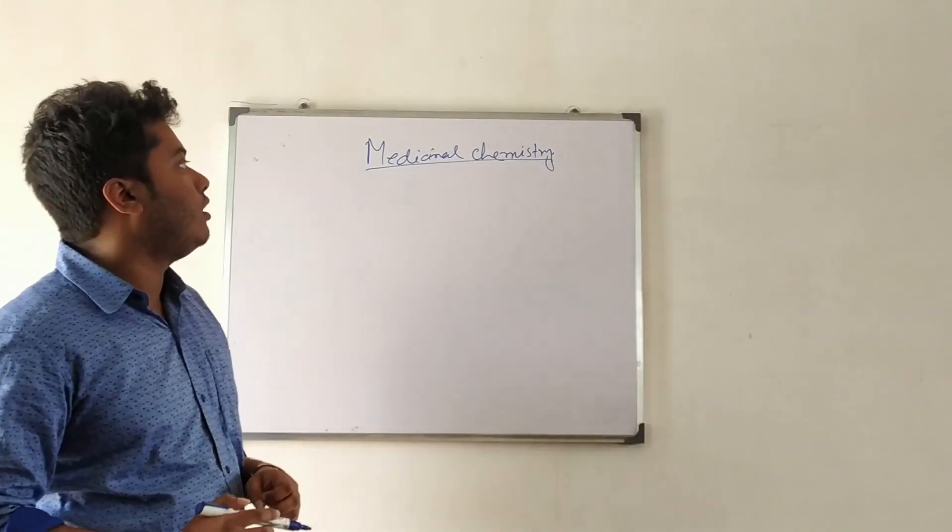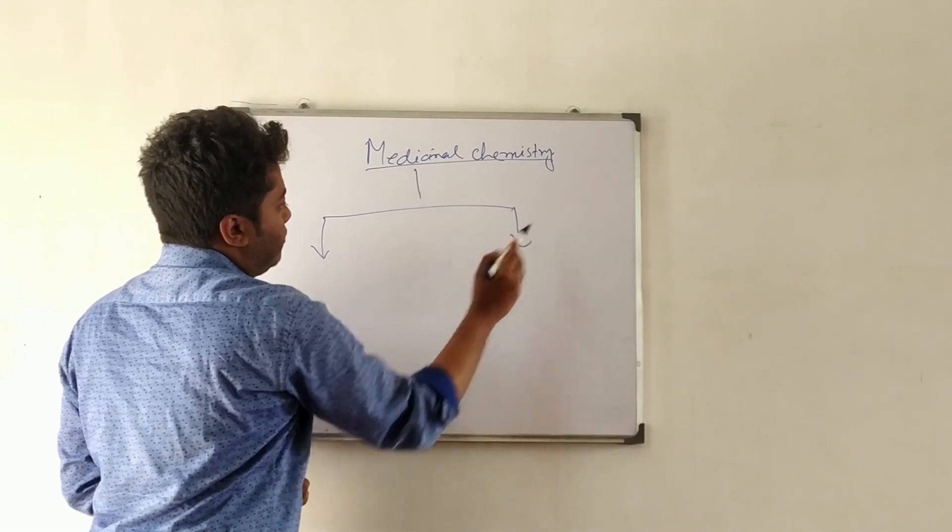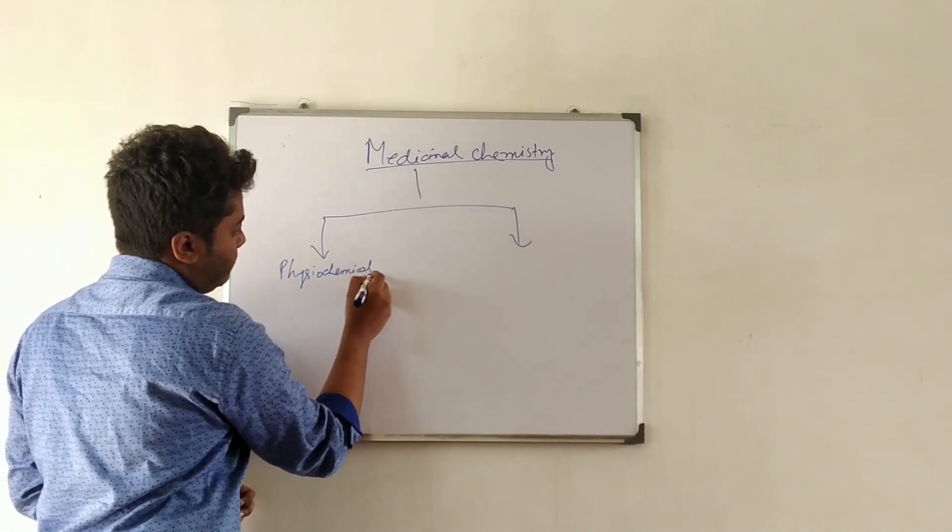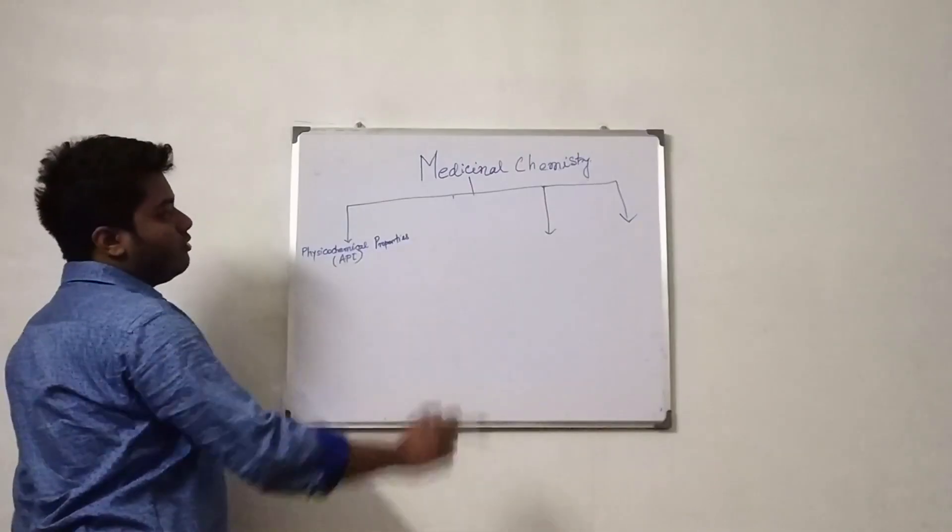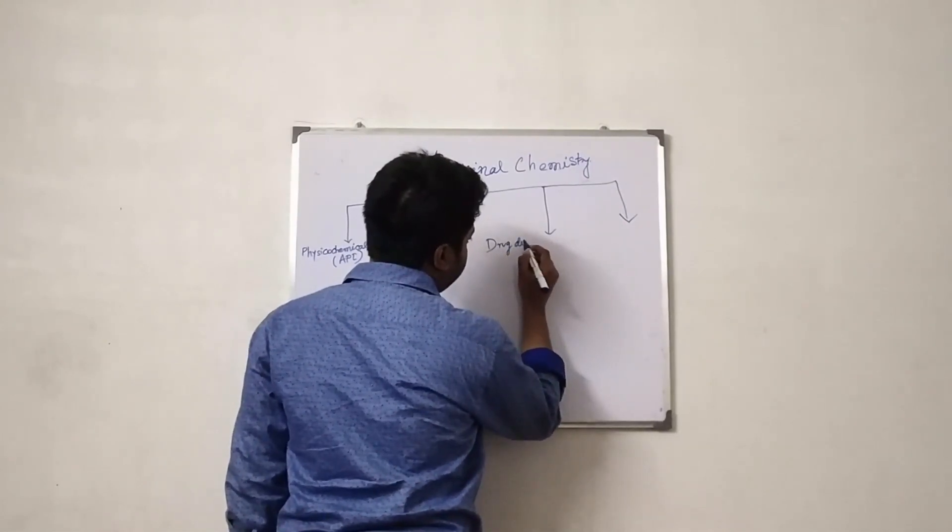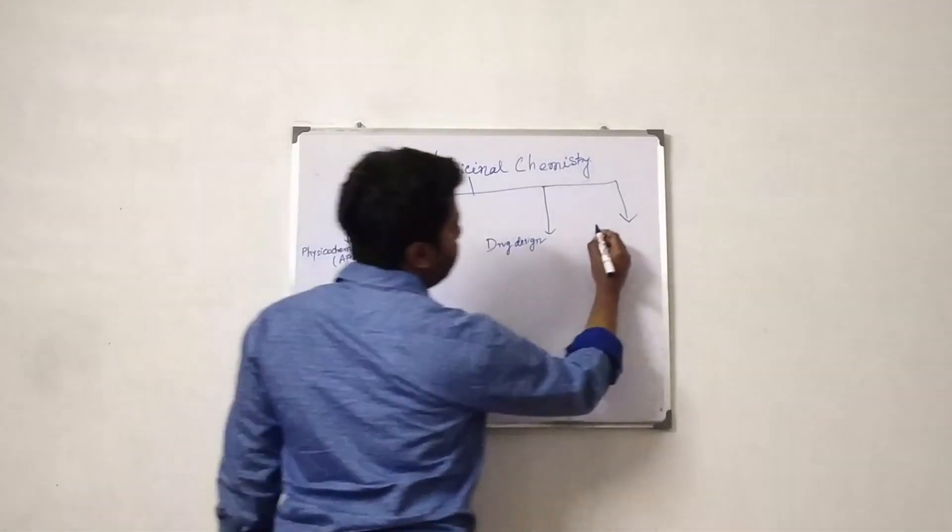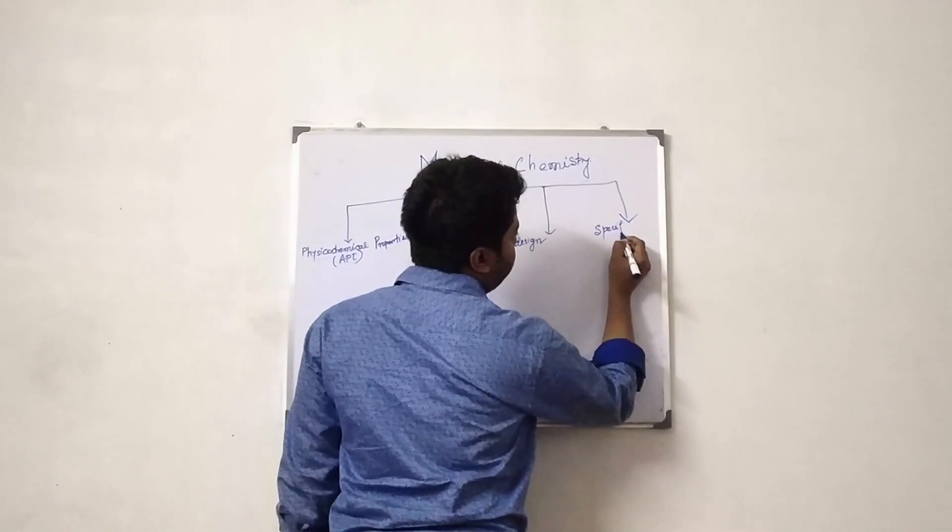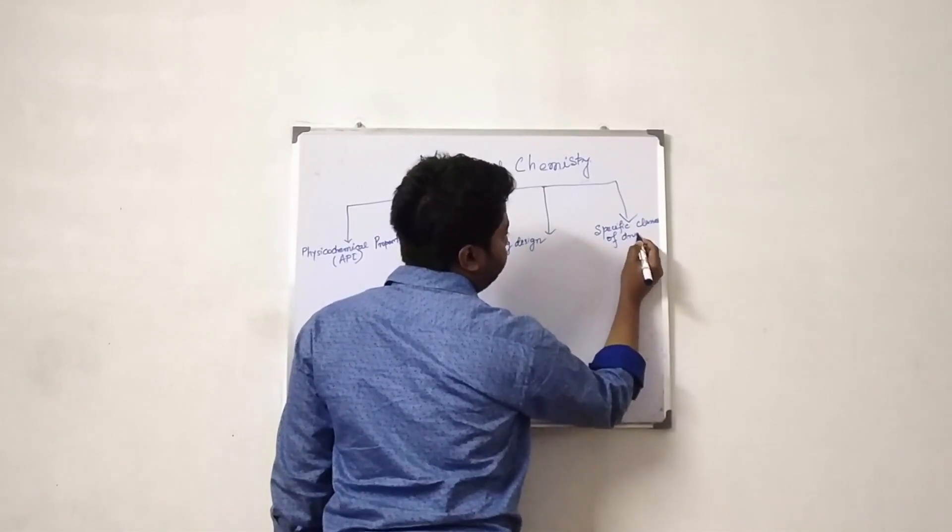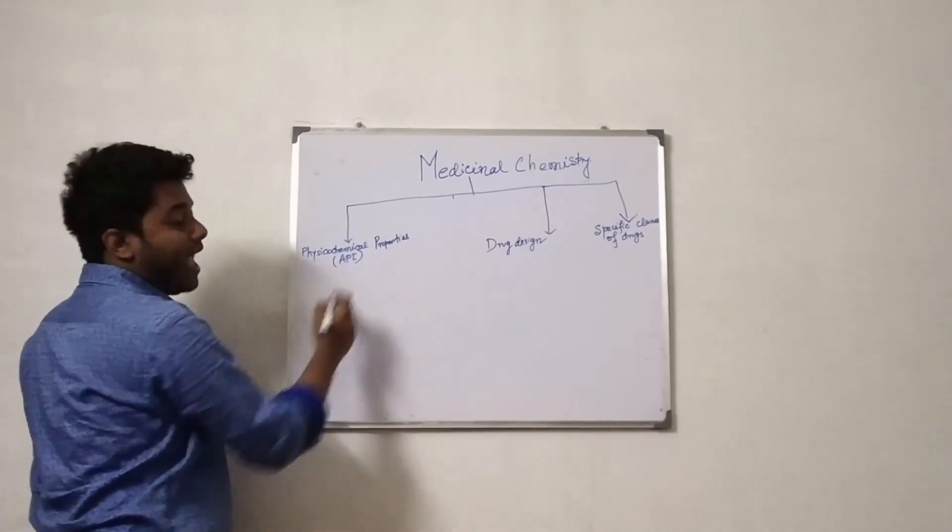So here we will study medicinal chemistry. We can divide it into two parts. What are the physiochemical properties of molecules? We can classify this into three parts: physiochemical properties, drug design, and specific drug classes. This is only the properties of active pharmaceutical ingredients.